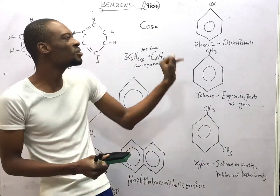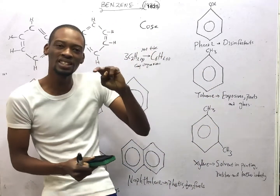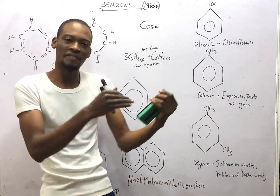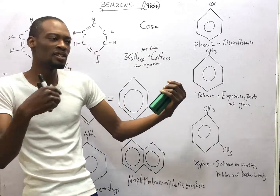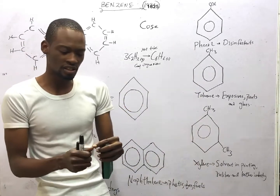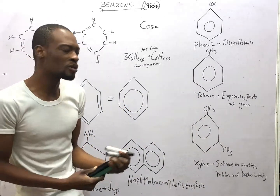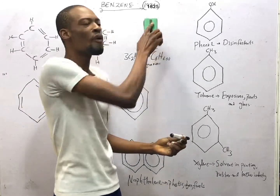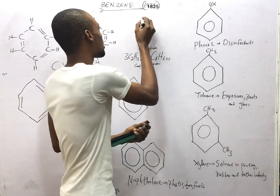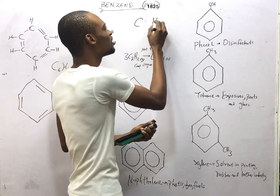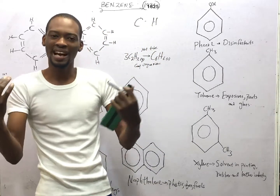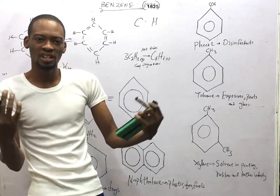This is as a result of the unique ability of carbon to catenate — combine with itself and other elements to form long chains and branched chains. Hydrocarbons, on the other hand, are compounds that contain carbon and hydrogen alone.